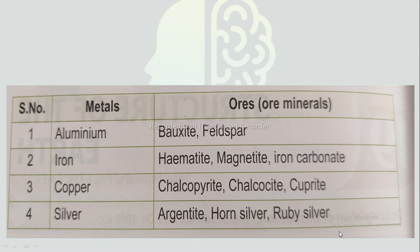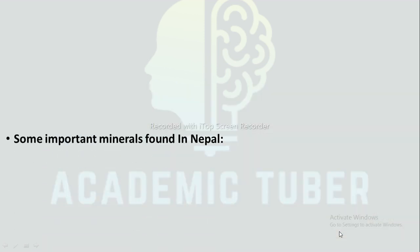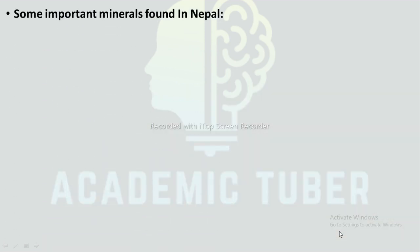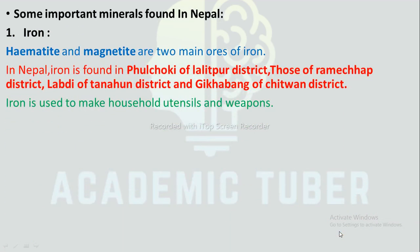Some important minerals found in Nepal. First: Iron. Hematite and magnetite are the two chief ores of iron. Iron is found in Phulchoki of Lalitpur district, Ramechhap, Labdi of Tanahu, and Gikhavang of Chitwan. Iron is used to make household utensils and weapons.